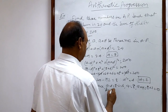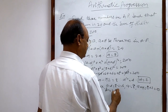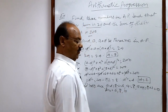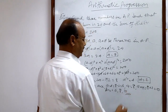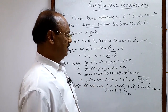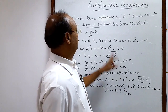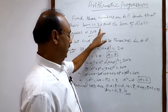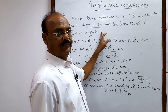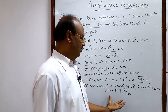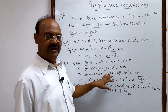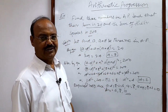So we are getting the answer: 6, 8, and 10. We can verify our answer — the sum of these three numbers is 24, and the sum of squares of these three numbers is 200. Hope you have understood it very well. Thank you very much for watching this video.